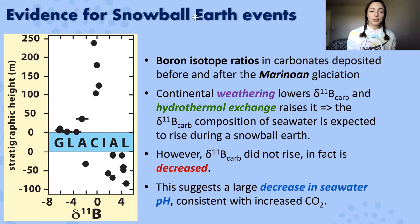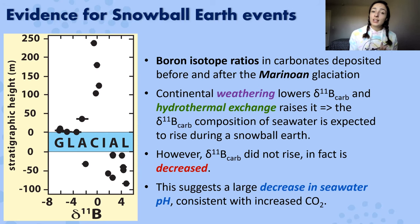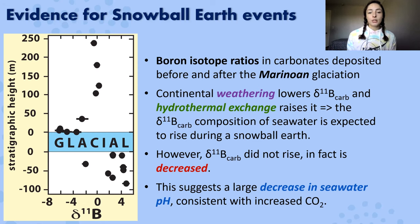The other isotope system for Snowball Earth evidence is boron isotopes. Boron isotope ratios in carbonates deposited before and after the Marinoan glaciation show a sharp decrease directly following the glaciation event. Typically, continental weathering lowers boron isotope ratios in carbonates, while hydrothermal exchange raises them — so boron isotope composition of seawater was expected to rise during the Snowball Earth event. However, it decreased instead, which is thought to be due to a large decrease in seawater pH, consistent with a large increase in CO₂ and consistent with glaciation.